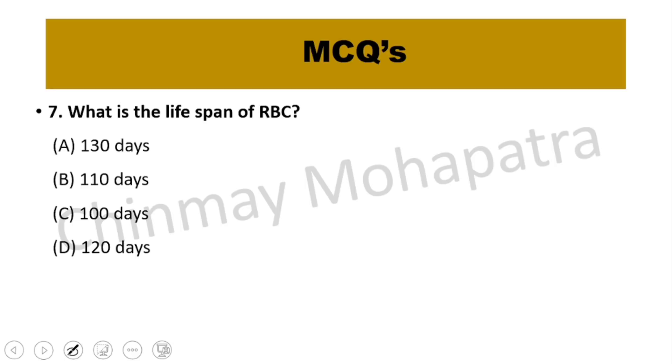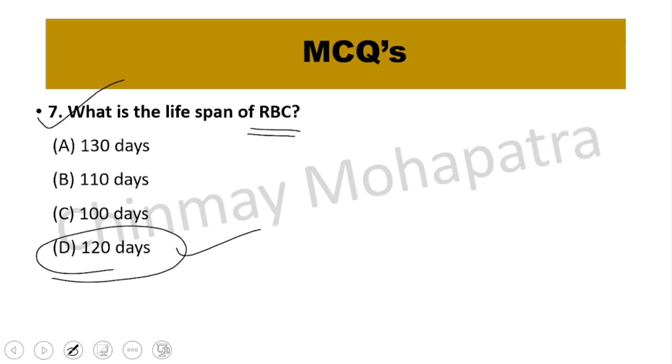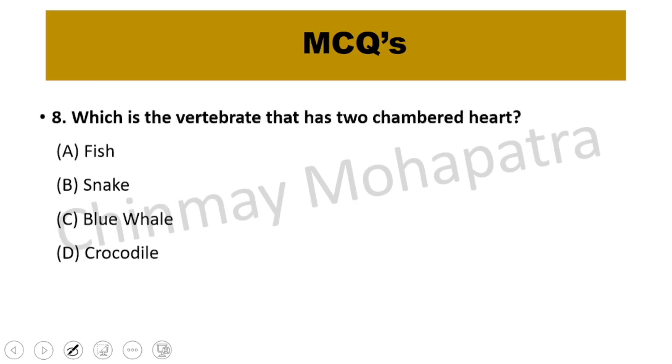Question number 7: What is the lifespan of RBC (red blood cells)? The lifespan of RBC is 120 days — that is the right answer.